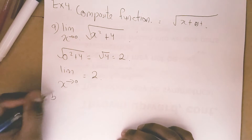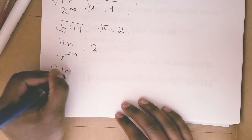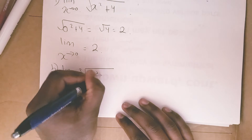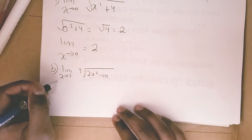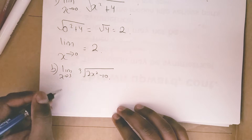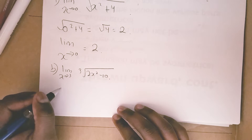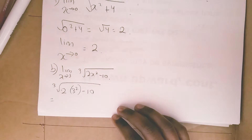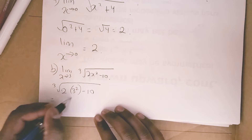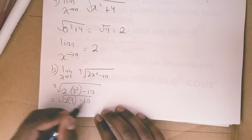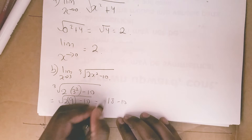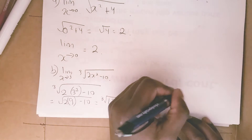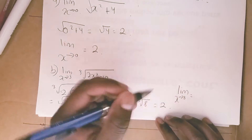For part b, find the limit as x approaches 3 for the cube root of (2x squared minus 10). Plug 3 into the equation: you get the cube root of (2 times 3 squared minus 10). That's 2 times 9 minus 10, which is 18 minus 10, equal to 8. The cube root of 8 is 2. So the limit as x approaches 3 is 2.